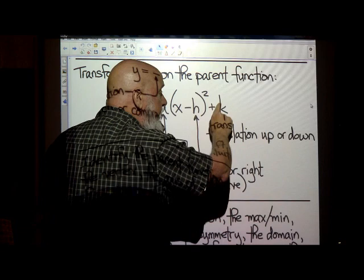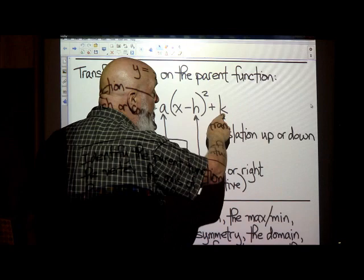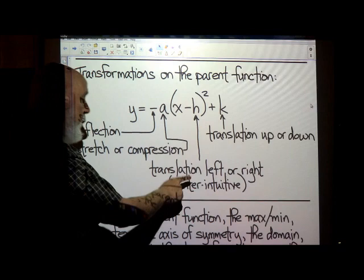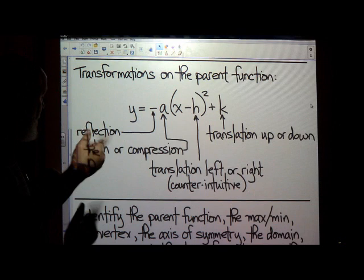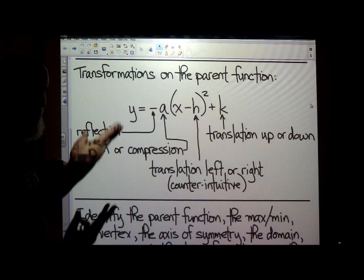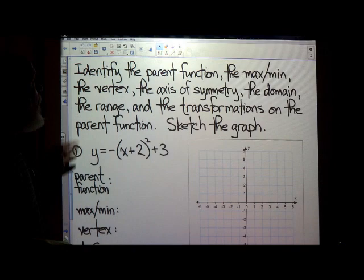The value outside the parentheses is not being squared. So whatever this is, if it's positive, it's going to go up; if it's negative, it's going to go down. The value inside the parentheses translates left or right, counterintuitively. That's what's going on through my head as I'm graphing these things, and hopefully when I'm showing you how to do them for the third time, it'll start to click.